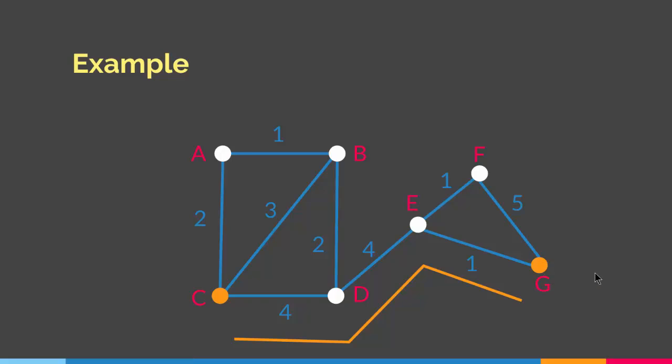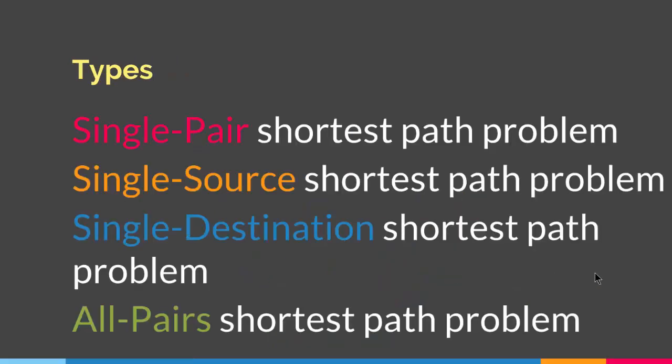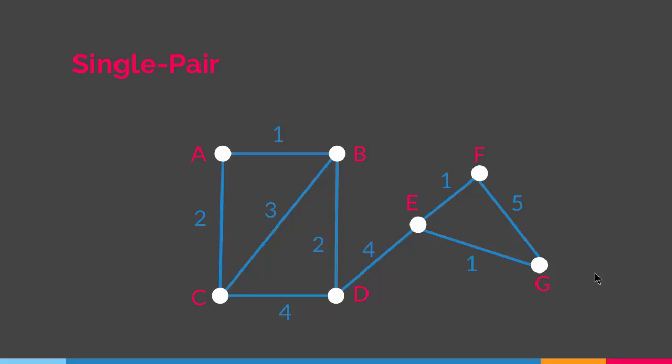That is the idea of the shortest path problem. We have several types. The single pair shortest path problem is finding a path between a single pair of vertices — for example, finding the shortest path between C and F, or between A and G. You take a single pair of vertices and find the shortest path between them.